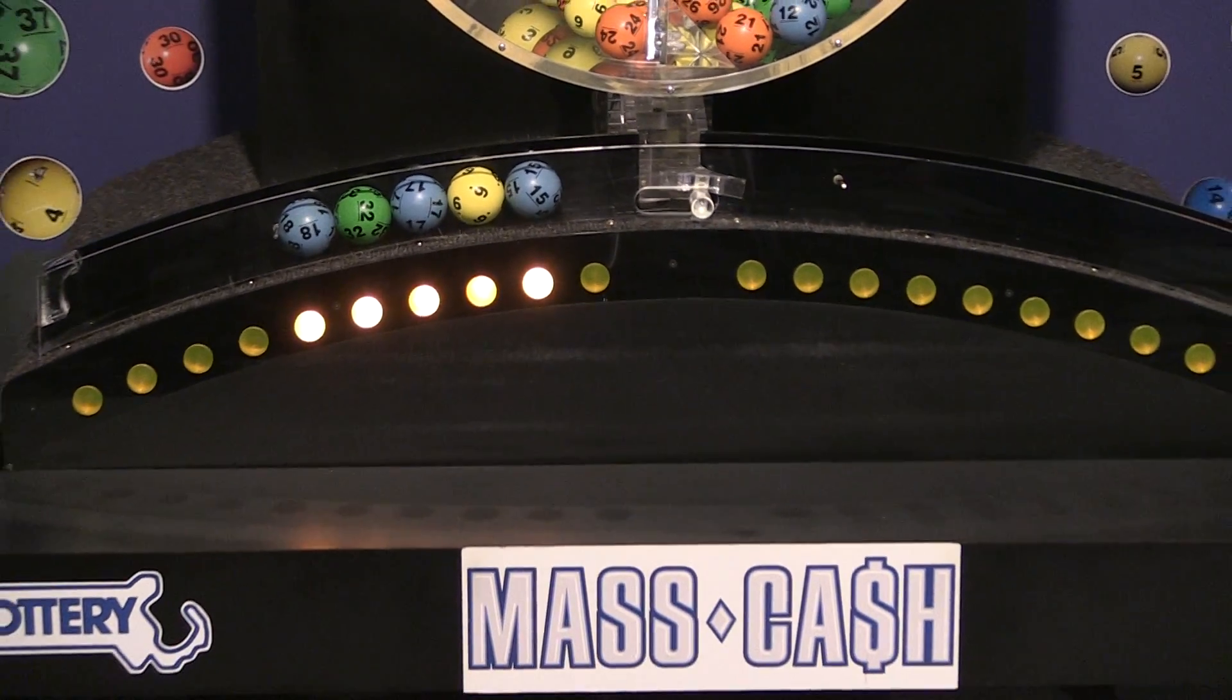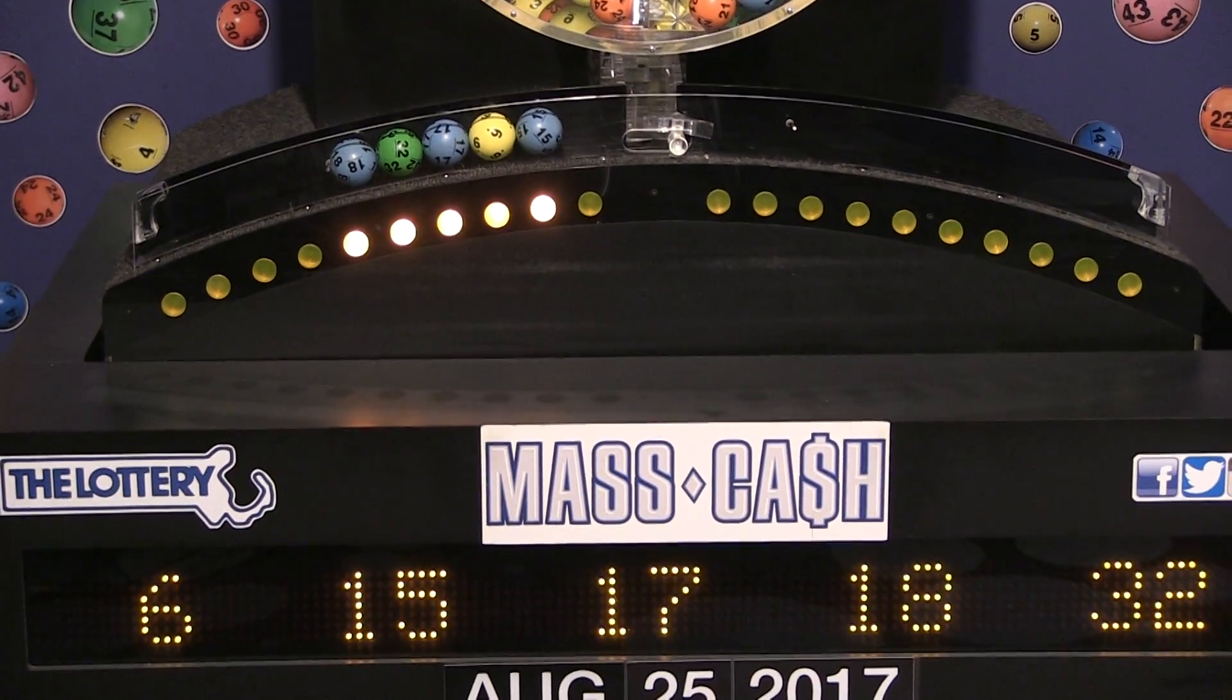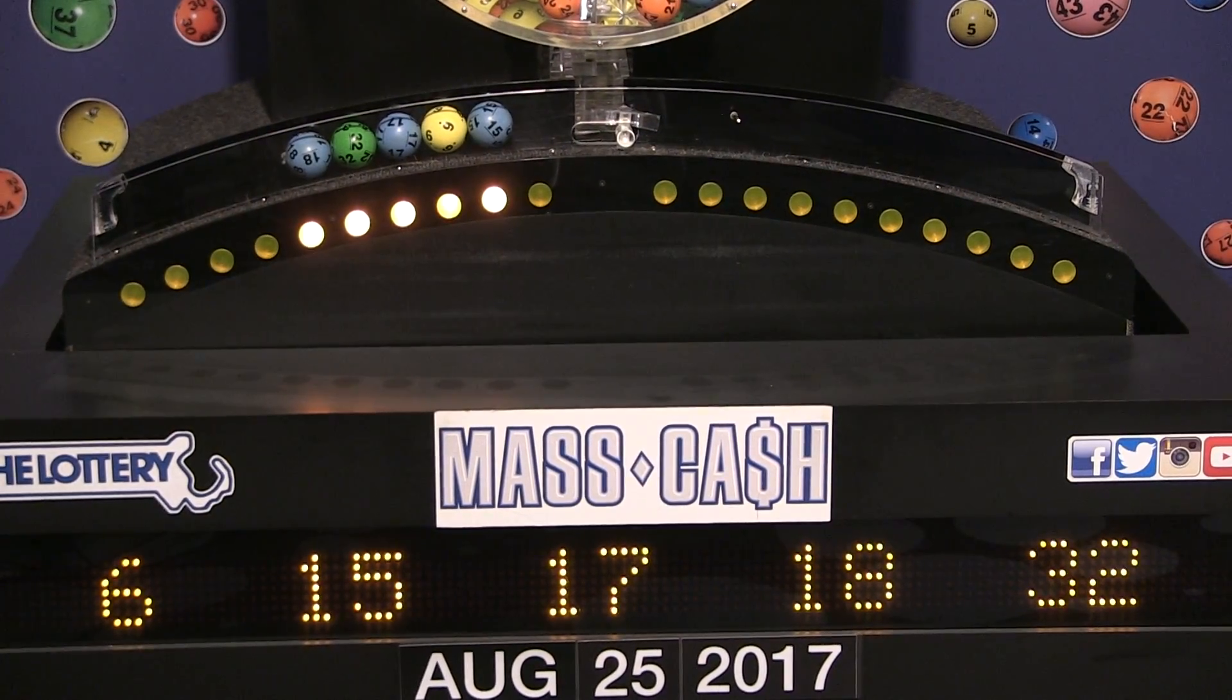Once again, the winning Mass Cash numbers for Friday, August 25th are 6, 15, 17, 18, and 32.